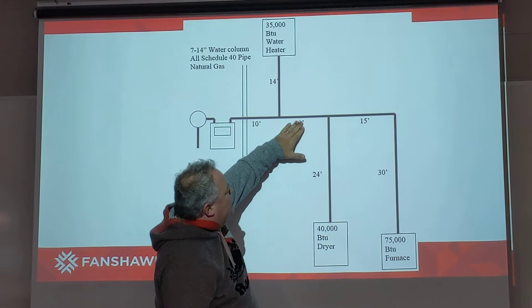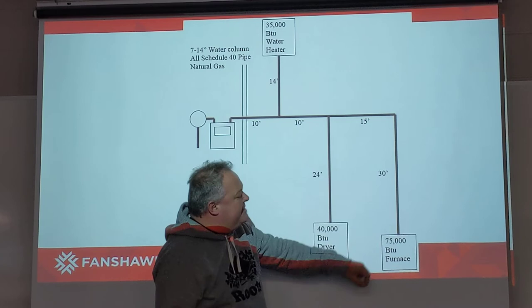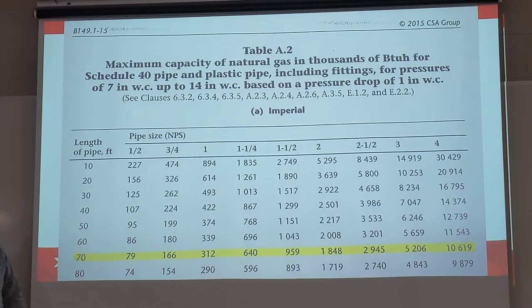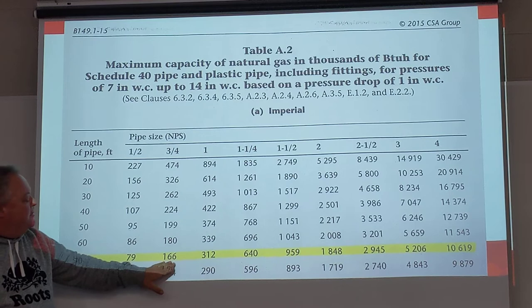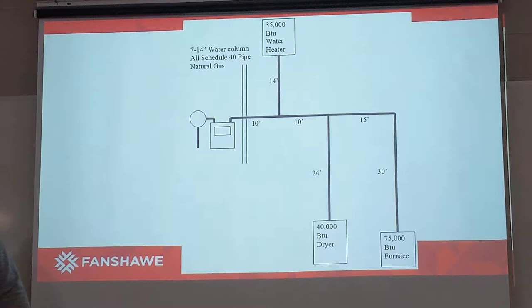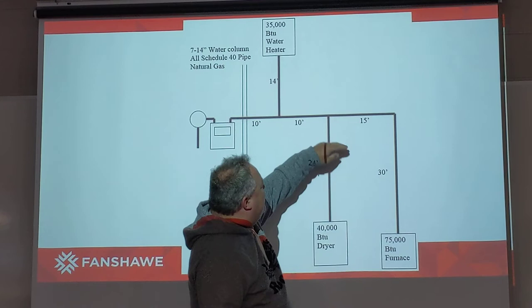We're going to add those two inputs together: 40,000 plus 75,000 gives us 115,000 BTUs. Going back to the table at the 70-foot code zone, I need a number above 115,000 BTUs. Three-quarter inch works perfectly in that application. So we have half-inch coming up, half-inch coming across, half-inch branching down to the dryer, and three-quarter inch at that 10-foot section.